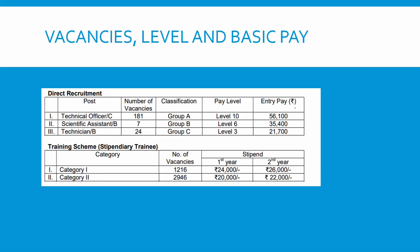What are the vacancies? There is a technical officer position with a major number of around 181 in the initial category — Group A. Group B and Group C belong to diploma students. There is also a stipendary trainee vacancy, but it is not a permanent job. So if you are an engineering student, I would ask you to prefer the technical officer exam, which is ideal.